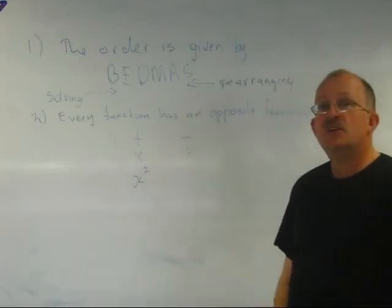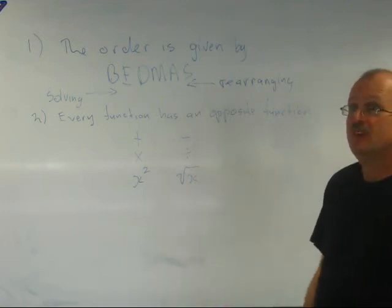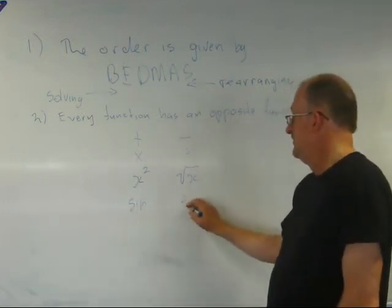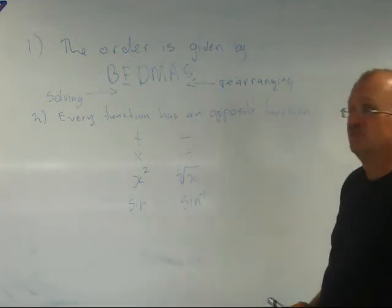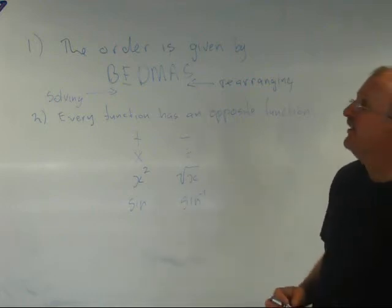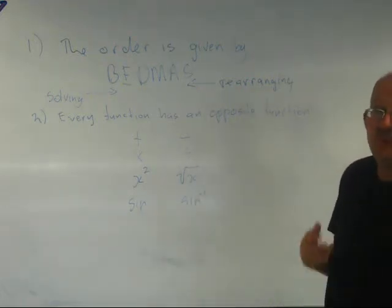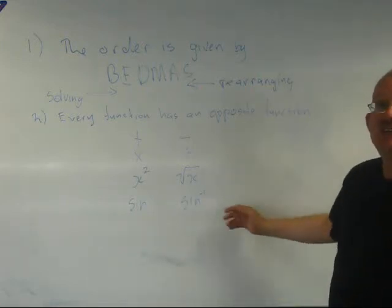For square, the opposite function would be square root. And for things like trig functions, sine, we have the inverse sine function, which is usually shift sine on your calculator. So every function that we're going to use, there's going to be an inverse function.